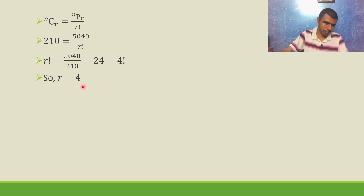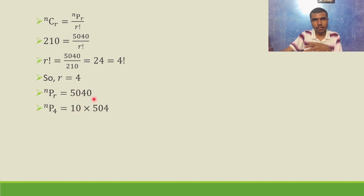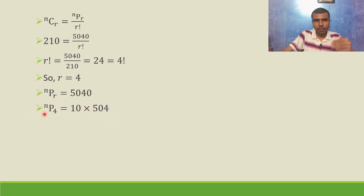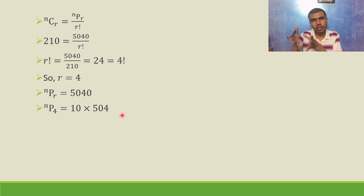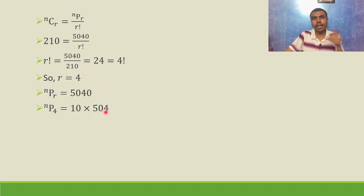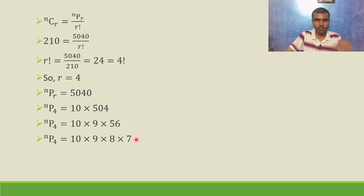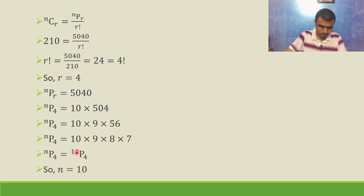Now nPr is 5040 and r is 4, so we have nP4 = 5040. We need to split 5040 into a product of 4 consecutive numbers. 5040 = 10×9×8×7. On the left-hand side we have nP4, and the right-hand side is a product of 4 consecutive numbers, so this is 10P4. Therefore n = 10.